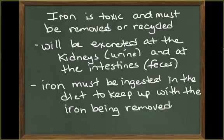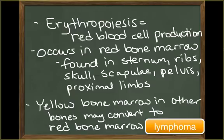Excessive iron deposition in the cardiac muscles has been linked to heart disease. Red blood cell formation is called erythropoiesis. This occurs only in red bone marrow, which is called myeloid tissue.